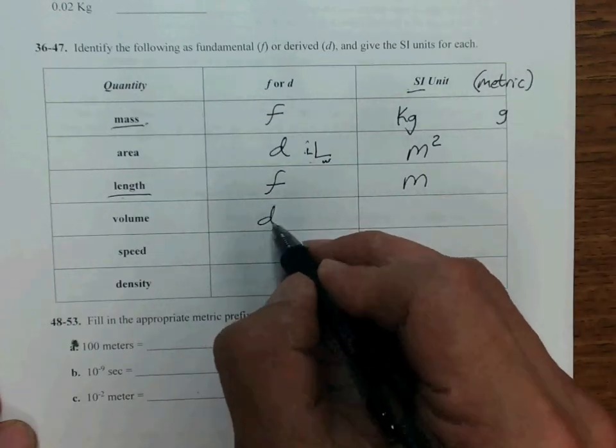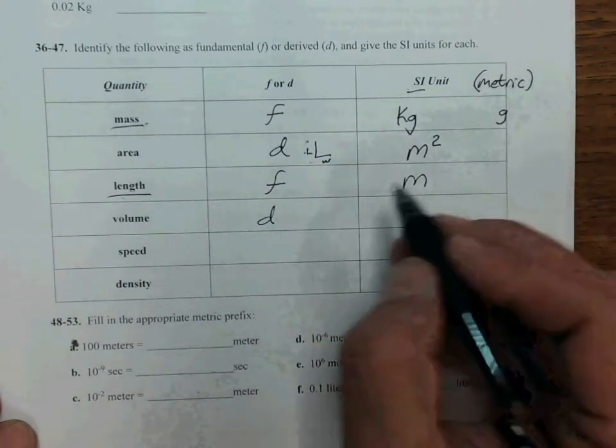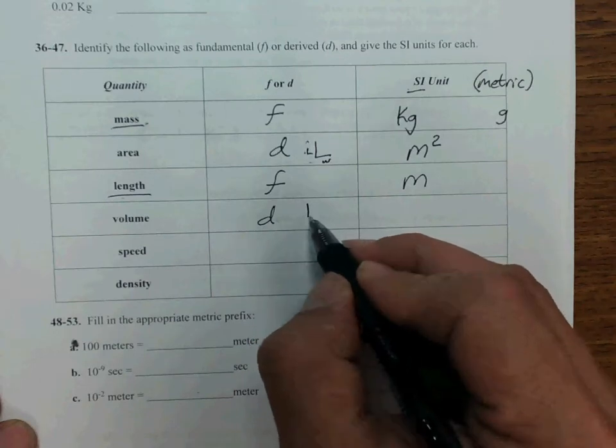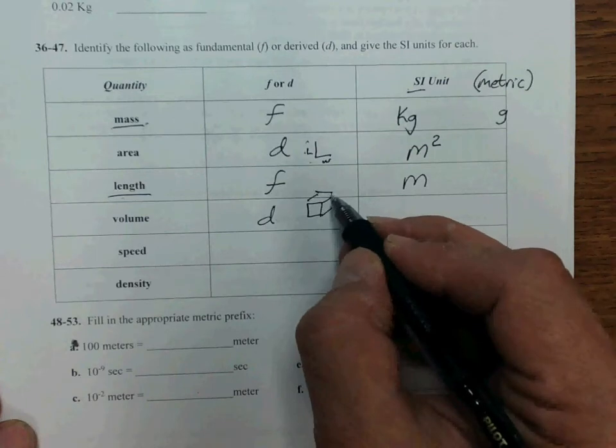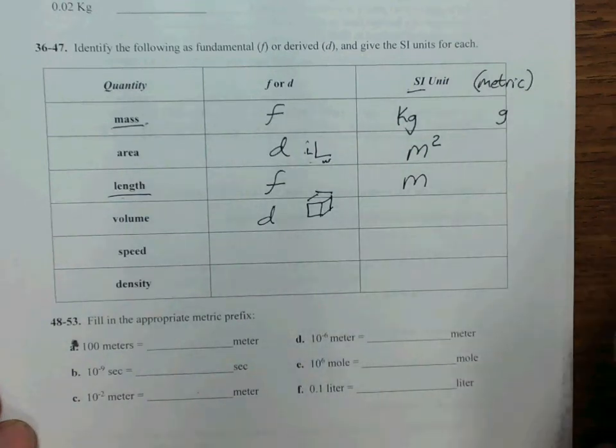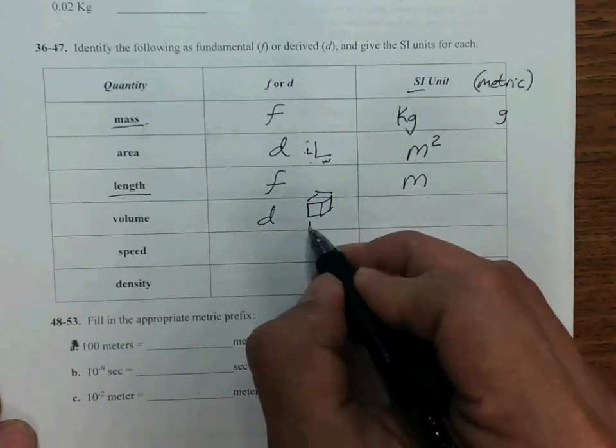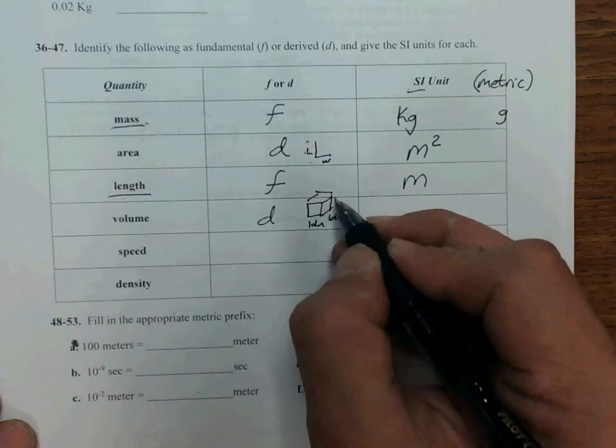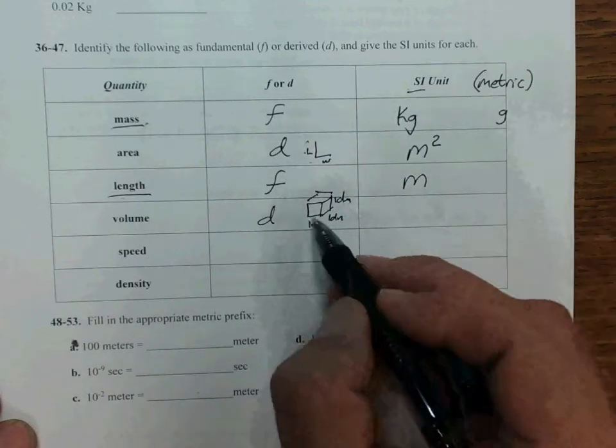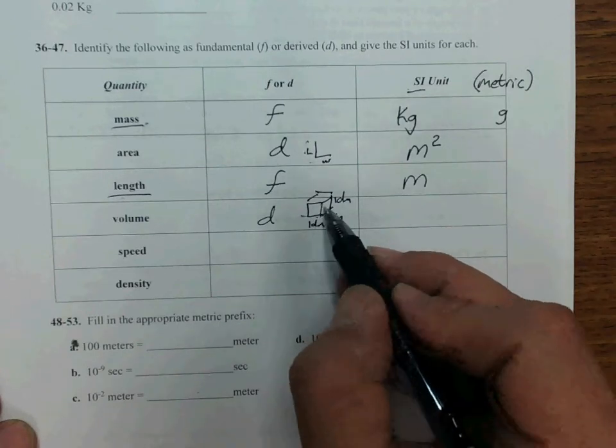Volume is a derived unit too. And it's a length times the width times a height. And in SI units, these lengths are a decimeter, one decimeter, and one decimeter. That's 10 centimeters or a tenth of a meter on each side.